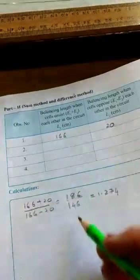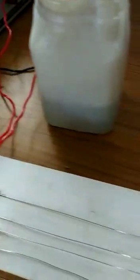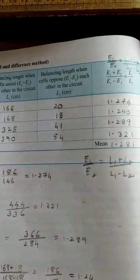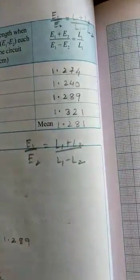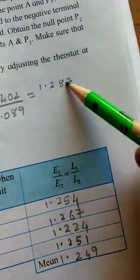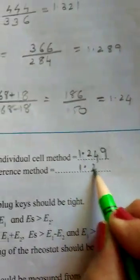Likewise, we can take four other readings by just shifting this. So we will take three other readings. So we found out the other values. And we got the mean as 1.281, which is almost equal to this 1.287. So by sum and difference method, we get the value as 1.281.